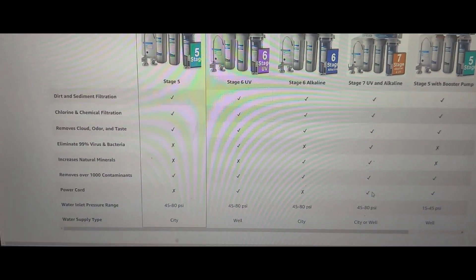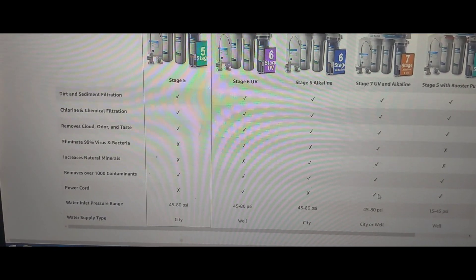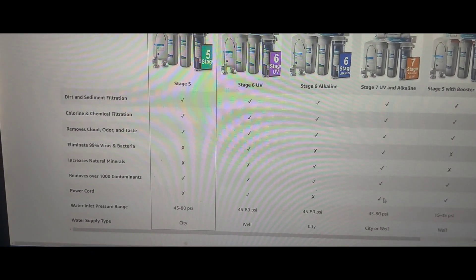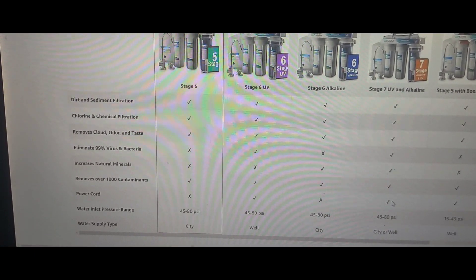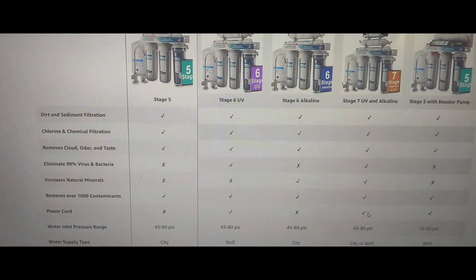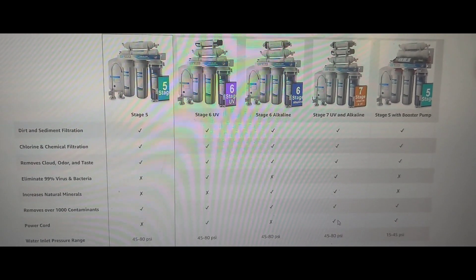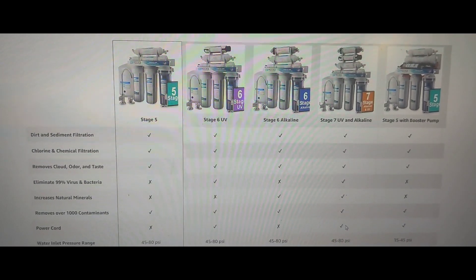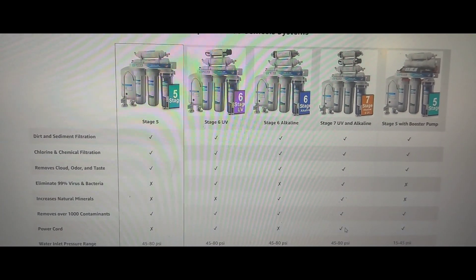Stage 5. But it does dirt and sediment filtration, chlorine and chemical filtration, removes cloud odor and odd tastes, removes over a thousand contaminants and it works with city water. What it doesn't do is eliminate the bacteria, increase natural minerals, and it doesn't have a power cord, which is good because it didn't have a booster pump or nothing. So, if you're looking to possibly get one of these, you might want to just skip right to the Stage 7 because it's got everything.